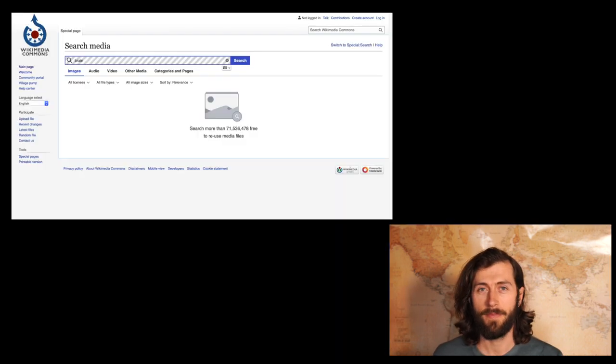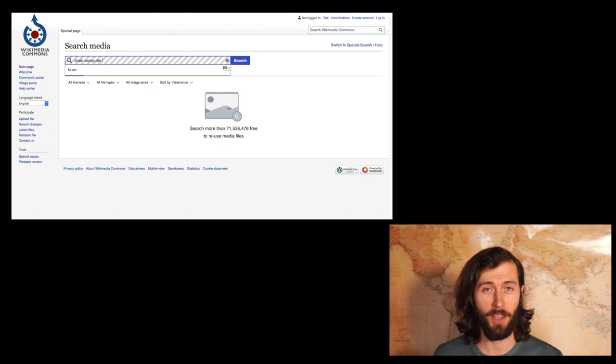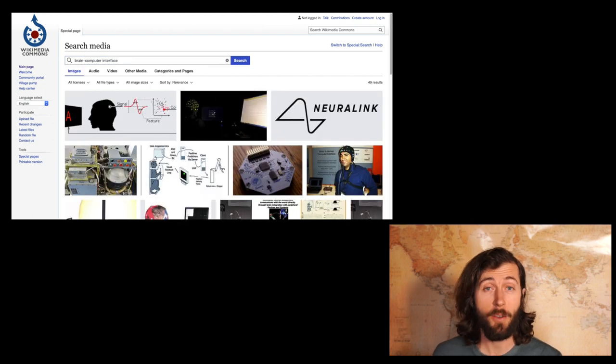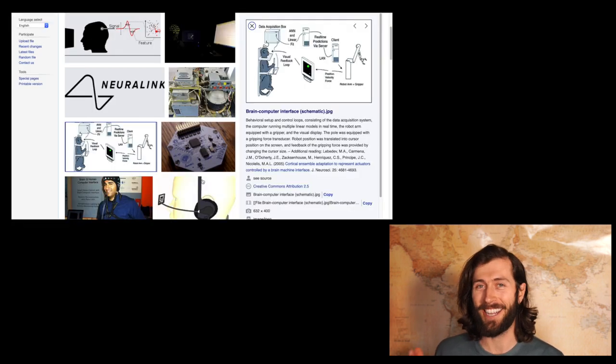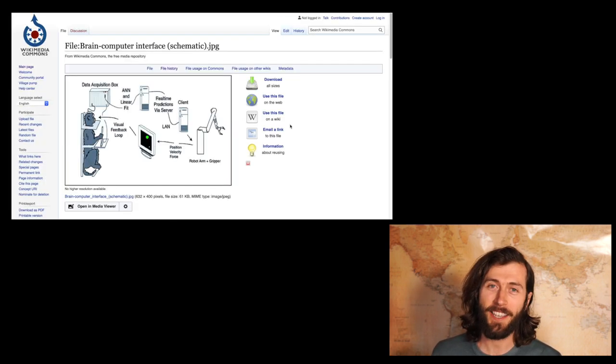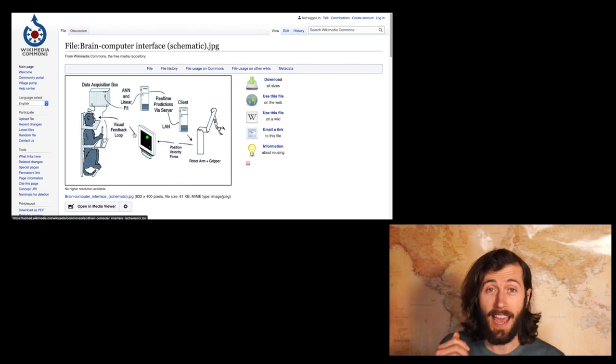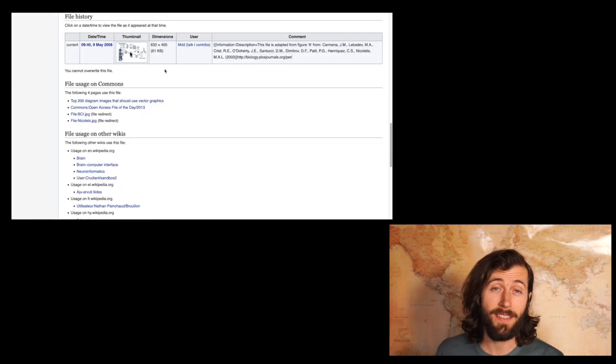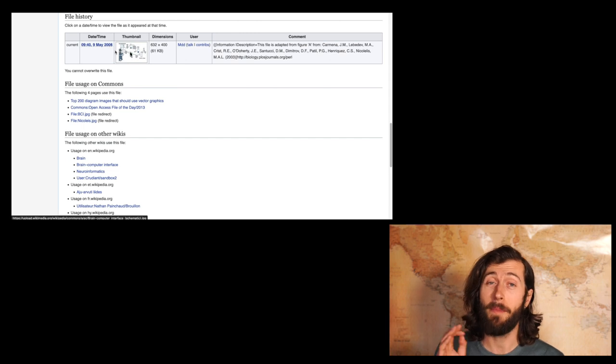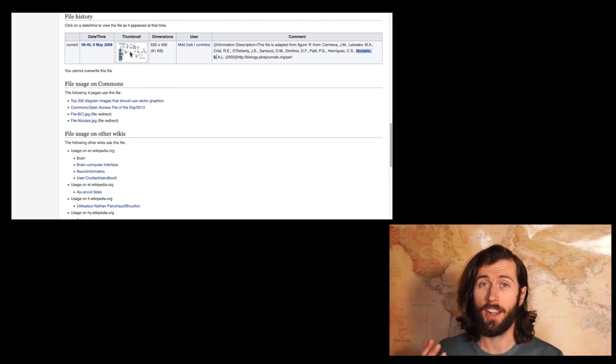So let's dive right in. Having a monkey control a computer with his brain is nothing new. In fact, if you would type brain computer interface into Wikipedia, you would find not only Neuralink's logo, but this schematic. This shows a monkey manipulating a joystick in a computer system, which will lead to him controlling a robot arm with his brain. And this comes from a pioneering paper in 2003 by Nicolaylis. So you can see this is a quite old concept. So what is it that Neuralink is bringing to the game?